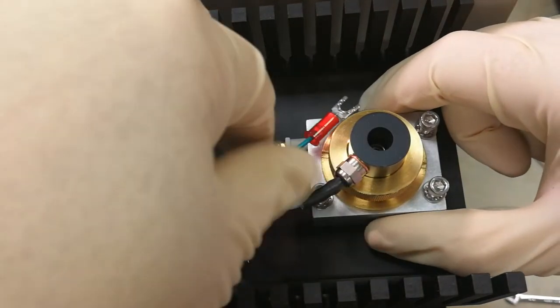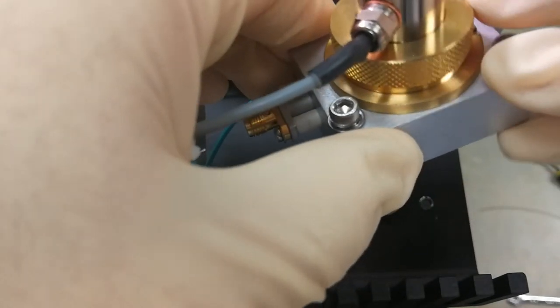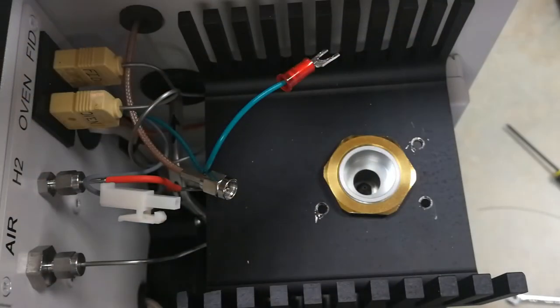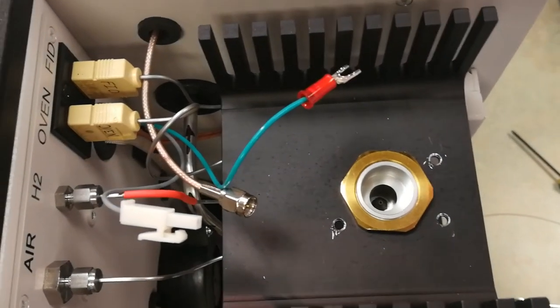Remove your FID collector, the whole assembly. Set it to the side. You can see where your jet is.